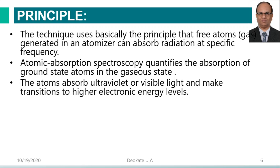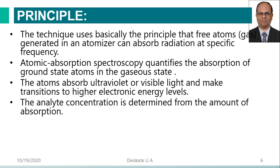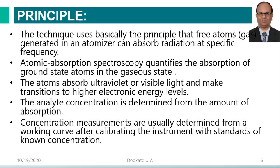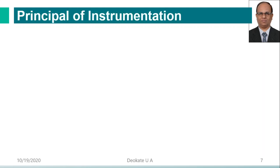The atoms in the ground state absorb radiation energies and go to the excited state. They will not remain long in the excited state and will emit excess energy as radiation — that intensity of re-emitted radiation is measured in atomic emission spectroscopy. Here, only the absorption is measured in atomic absorption spectroscopy. Analyte concentration is determined from the amount of absorption and can be used for qualitative and quantitative analysis. Concentration measurements are usually determined from a working curve after calibrating the instrument with standards of known concentration.